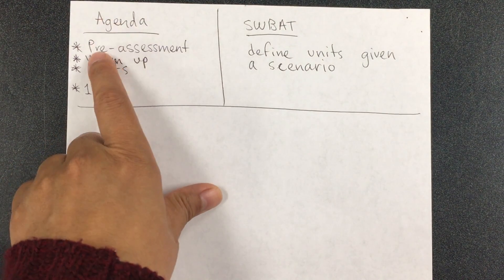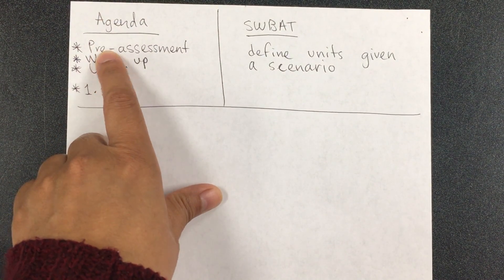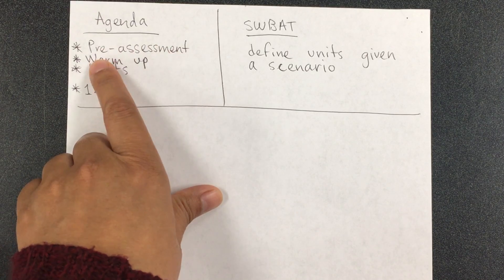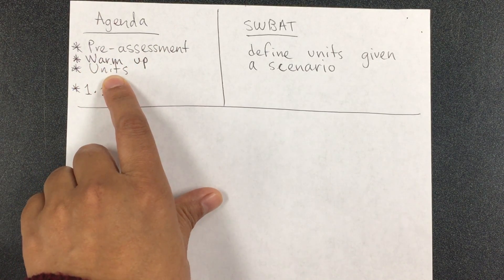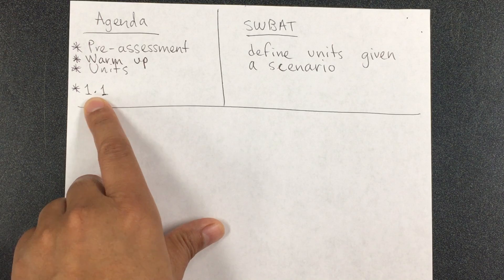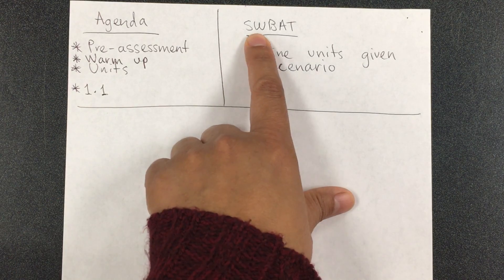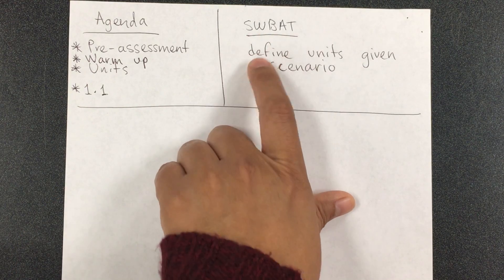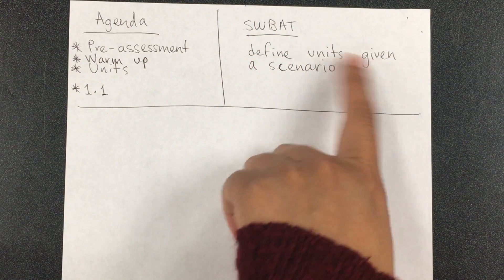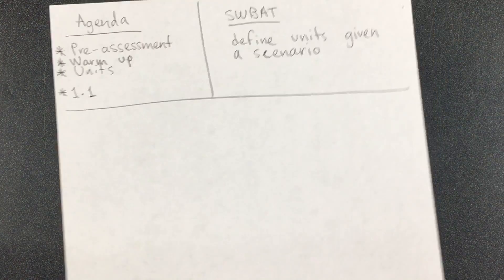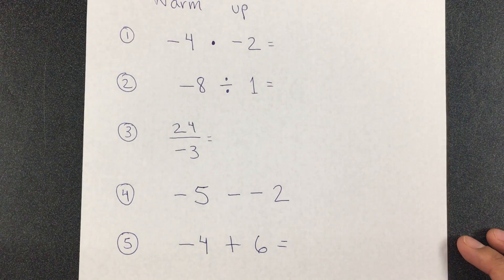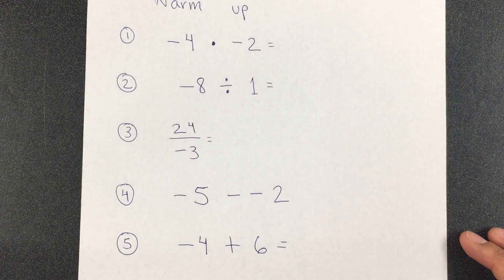Hello students. Today's agenda is to have a pre-assessment. We're going to have a small warm-up, we'll learn about units, and you will be able to work on section 1.1. Today students will be able to define units given a scenario. You have worked with units before, but now it's going to be related to a scenario. So let's have the warm-up.